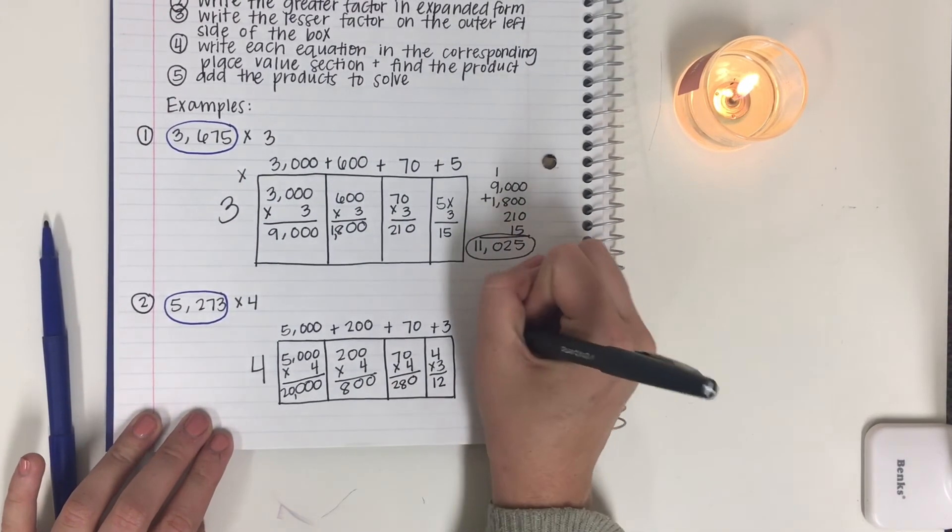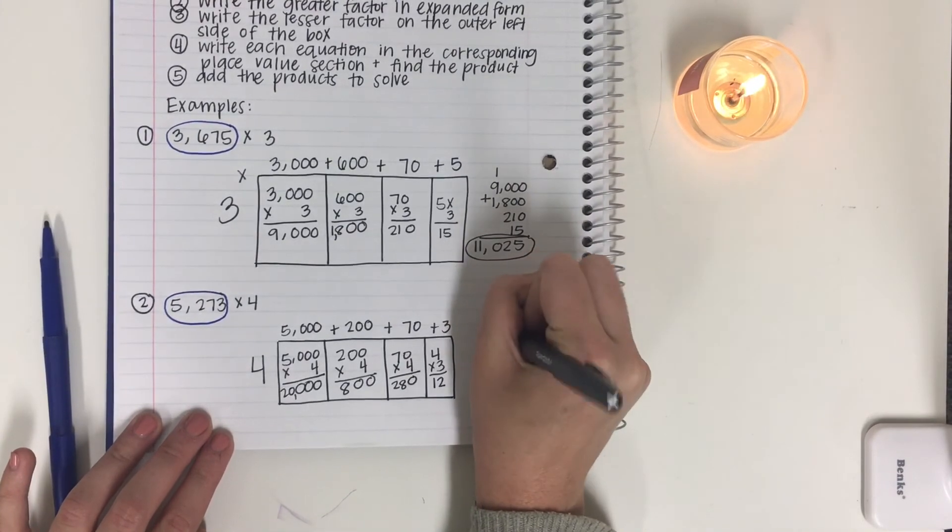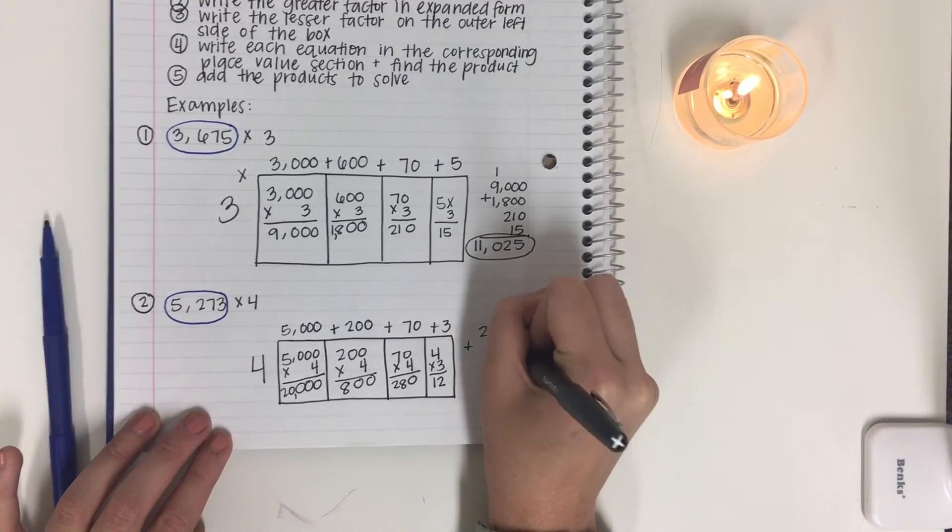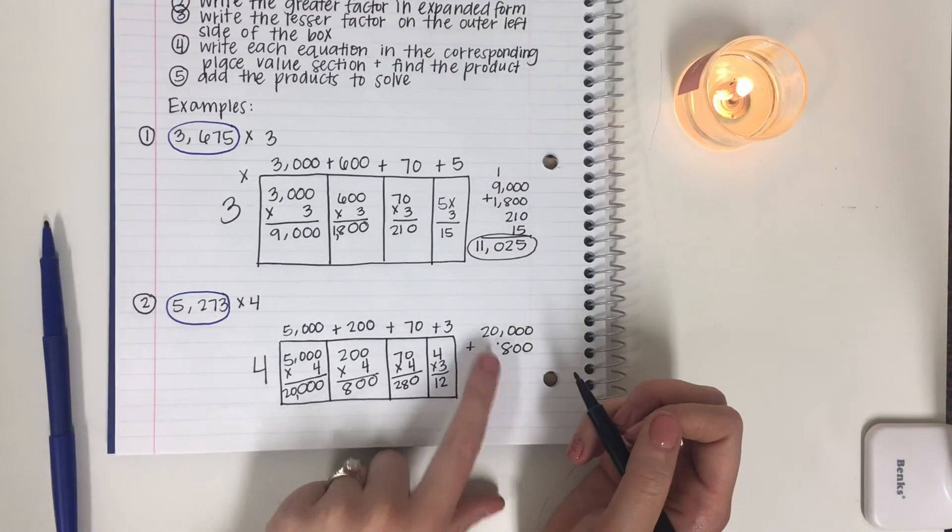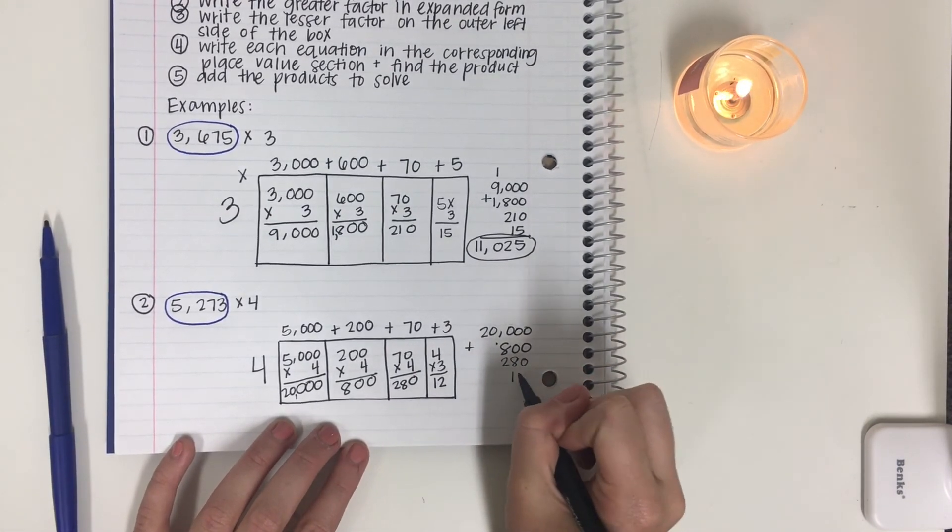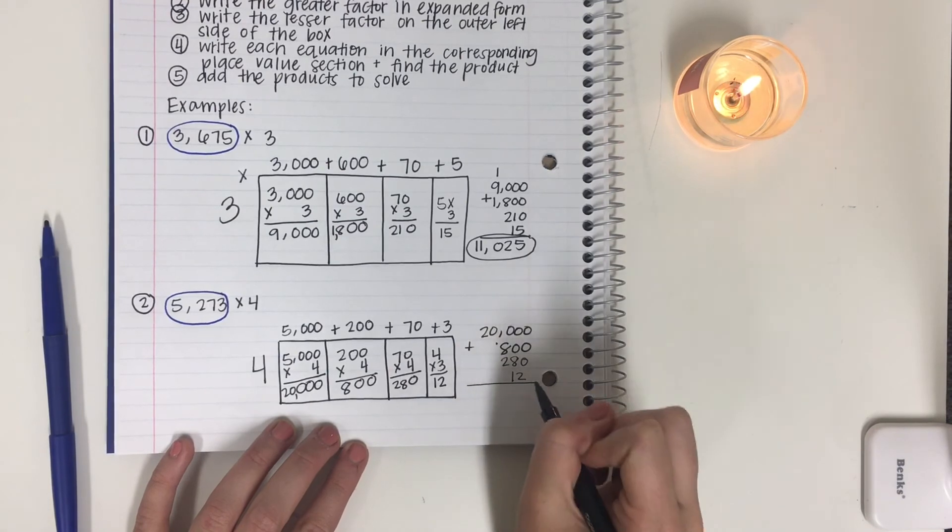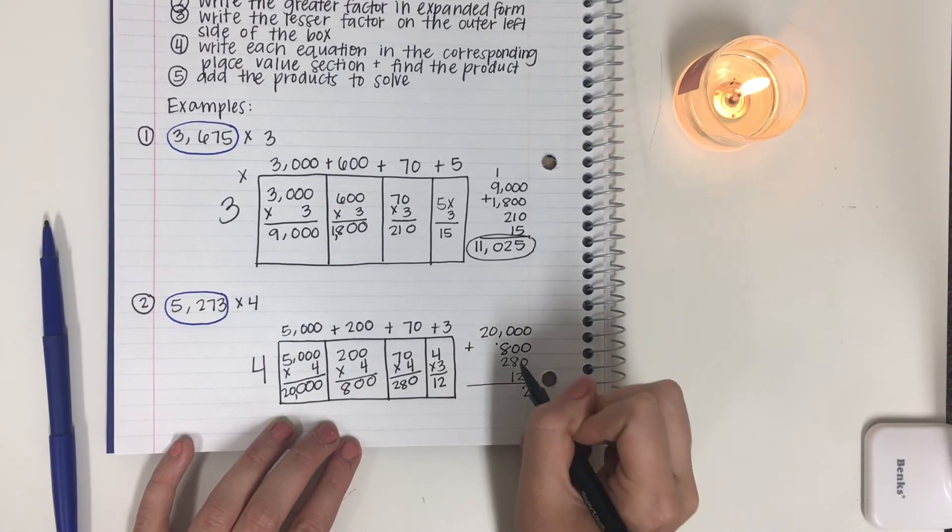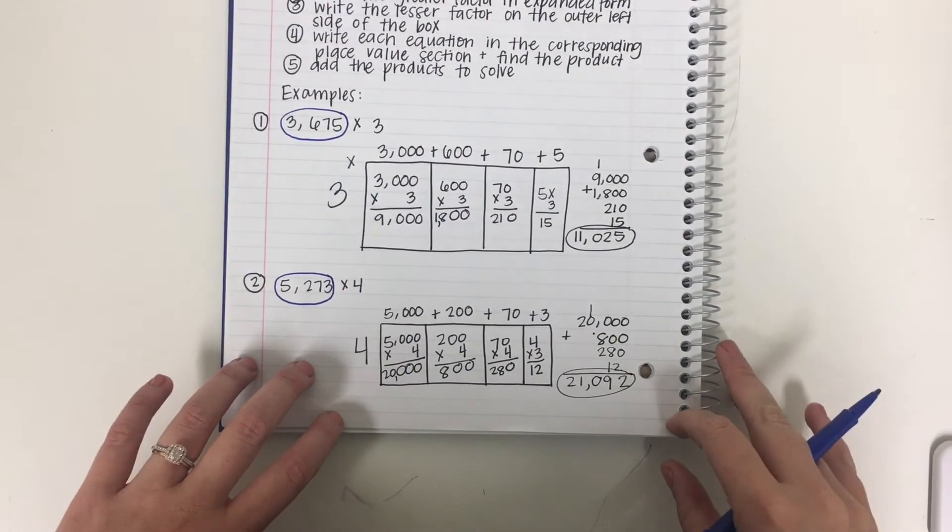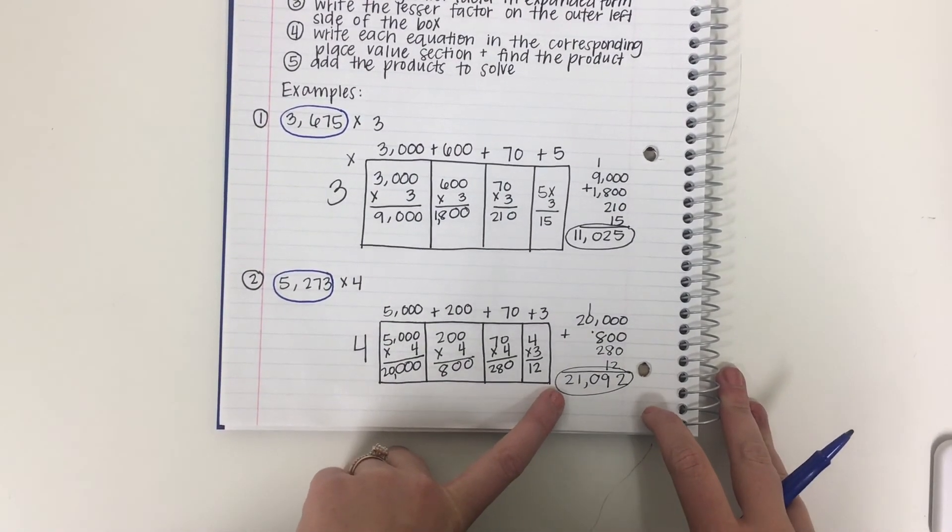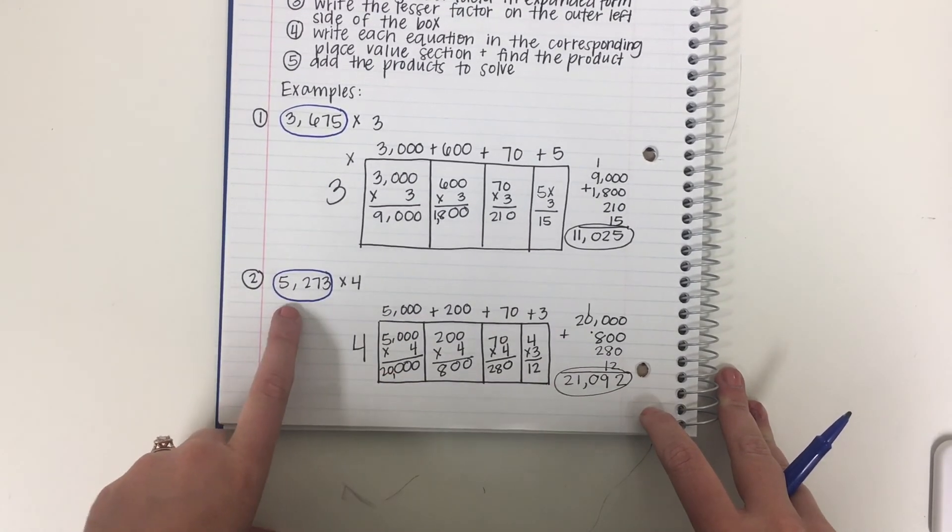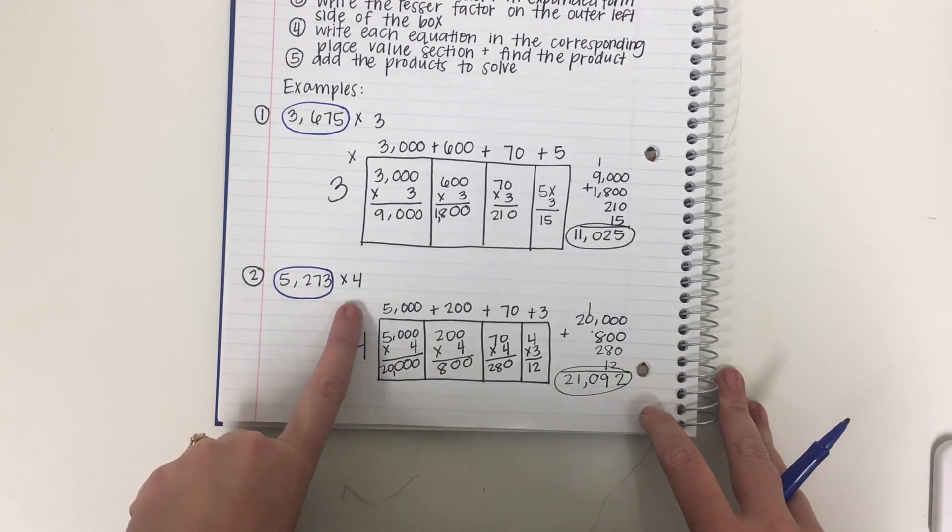Step 5 is to add the products up and solve. So to my right, I'm going to add them up. We got 20,000 plus 800. You've got to make sure you line up your place values correctly. I almost wrote it in the wrong place value. 280, 12. So we got 2, 8, 9, 8, 9, 10. Okay, I think it cut off a little bit, but all I did was finish up adding and I got my final sum of 21,092 for my product of 5,273 by 4.